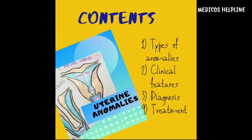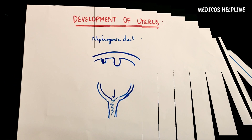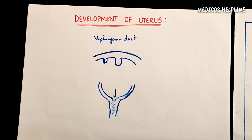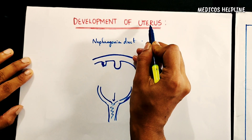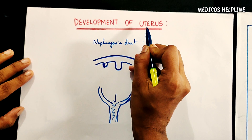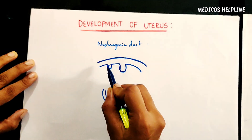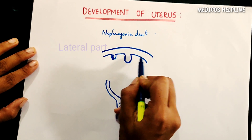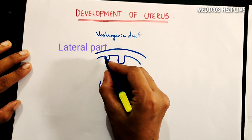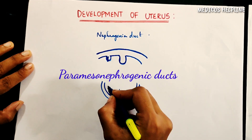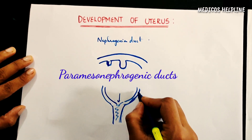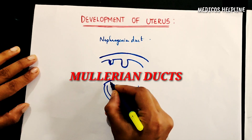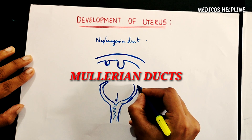We'll be dealing with the types, clinical features, diagnosis, and treatment. So let's get started. Let us have a quick look at the development of the uterus. During the embryonic stage, the uterus develops from the nephrogenic duct — that is, the lateral part of the nephrogenic duct gives rise to two paramesonephric ducts, or the Müllerian ducts.